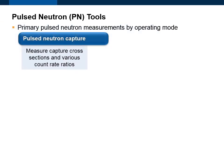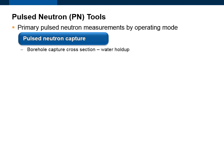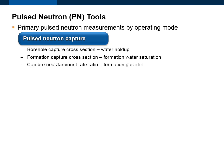Pulse Neutron Capture tools measure capture cross-sections and various count rate ratios. The borehole capture cross-section can be used to calculate water holdup. The formation capture cross-section is used to calculate formation water saturation and determine formation oil-water contacts. The capture near-to-far count rate ratio is used primarily for formation gas identification, but it is also sensitive to gas in the borehole. The inelastic near-to-far count rate ratio can be used to calculate borehole gas holdup, but it is also slightly sensitive to gas in the formation.